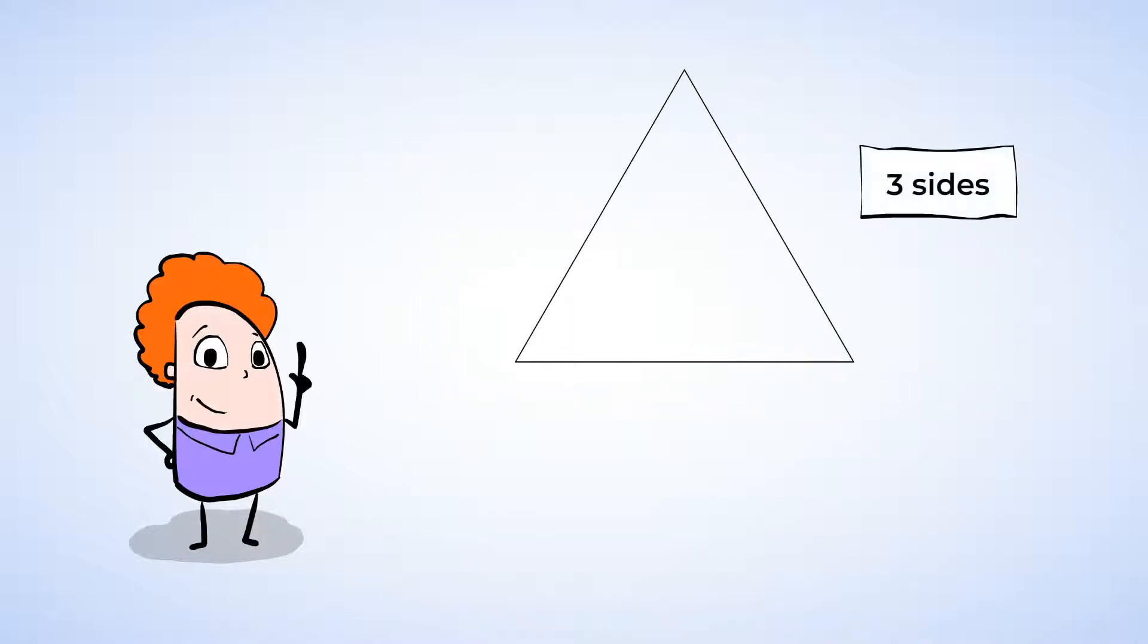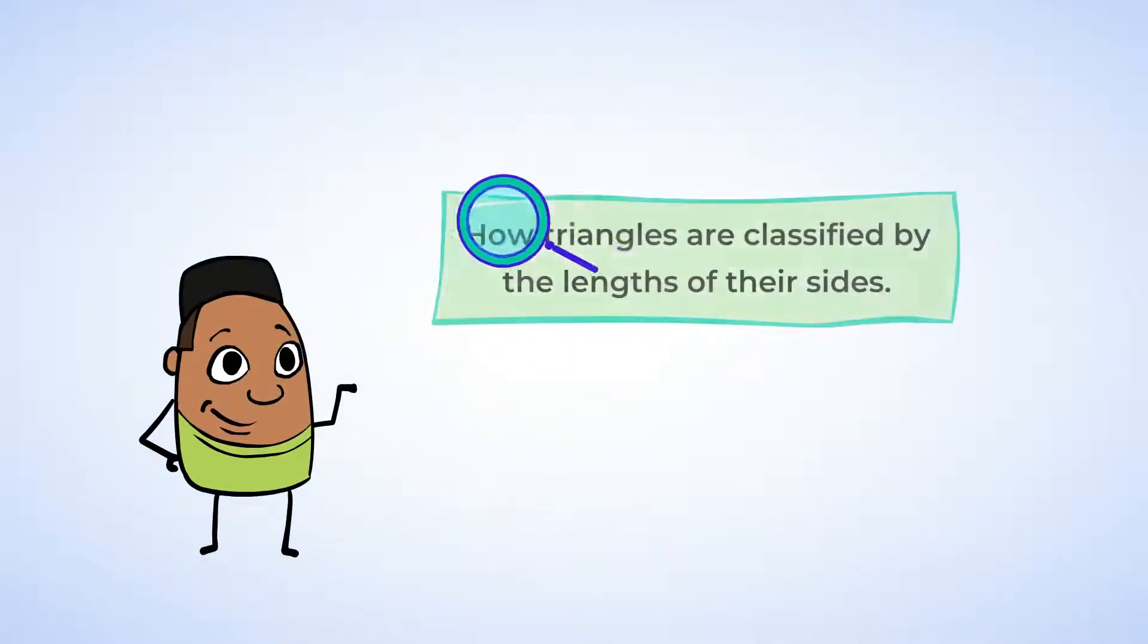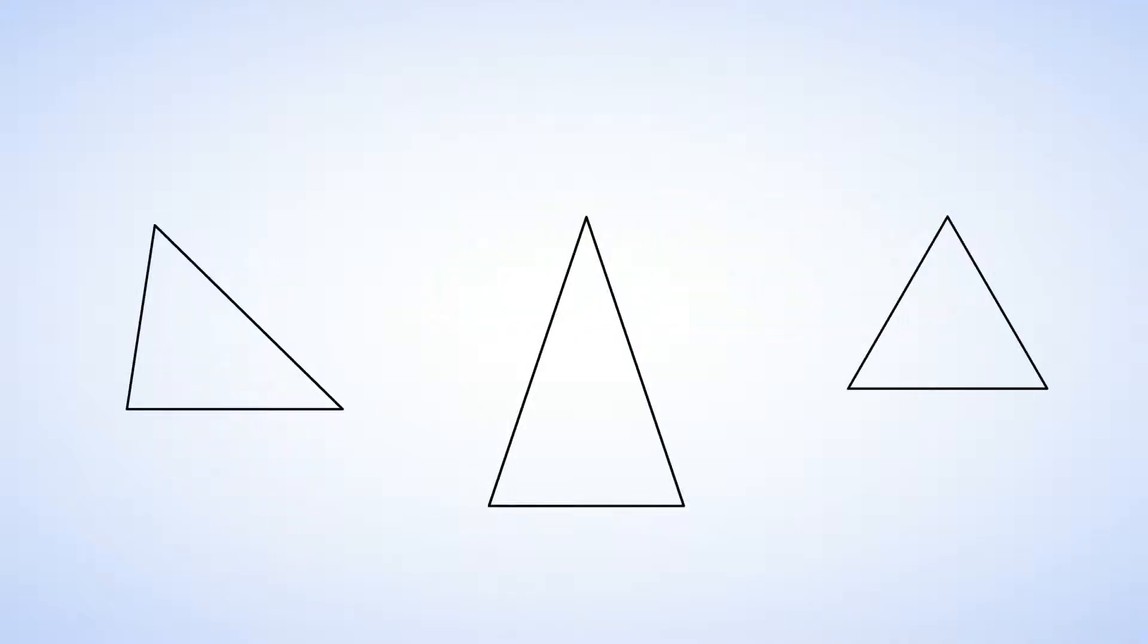We know that triangles have three sides, but there's more to them than just that. Triangles can be classified by their sides and their angles. We're going to start by looking at how triangles are classified by the length of their sides. There are three different ways to classify them: scalene, isosceles, or equilateral.